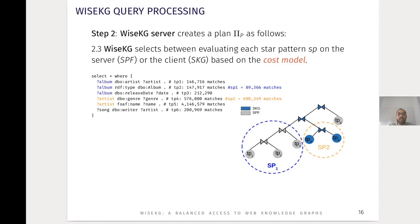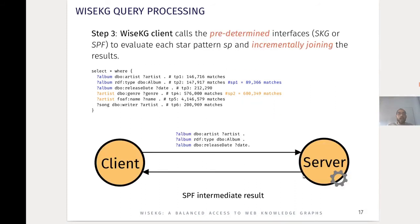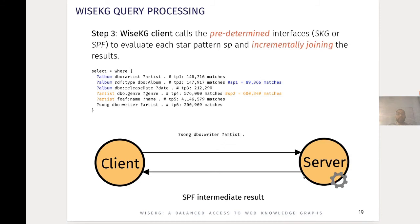The last step of plan creation: YSKG server selects between evaluating each star pattern on the server using SPF or on the client using SmartKG, based on the cost model. In our example, SP1 will be executed using SPF on the server side and SP2 will be executed using SmartKG on the client side. After receiving the plan from the server, the YSKG client calls the predetermined interface to evaluate each star pattern and incrementally joins the intermediate results. For the first star, YSKG sends an SPF request and the server responds with SPF intermediate results; for the second star, the client sends a SmartKG request and the server responds with a graph partition. Finally, the single triple pattern is evaluated based on an SPF request.